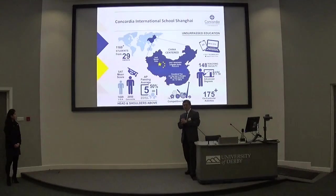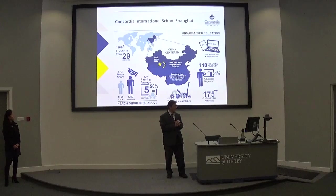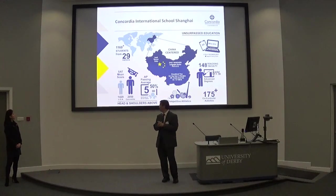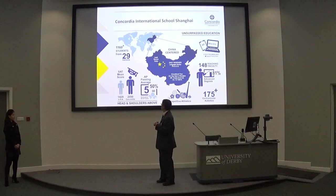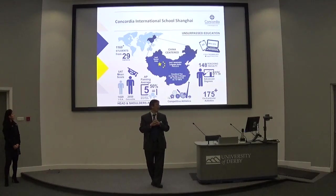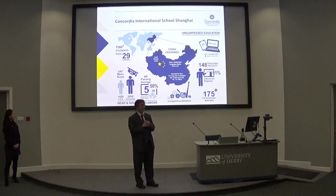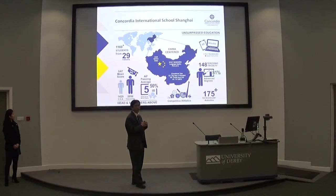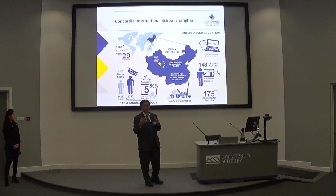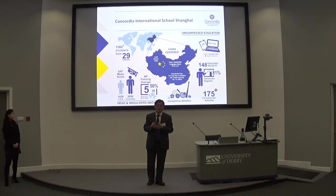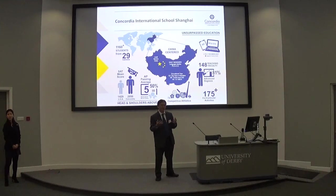Just a very brief intro of Concordia International School in Shanghai. We're actually located in China, and these are some of our statistics. We run the American program. We have about 1,160 students, about 148 teaching faculty, and one-to-one computers from grade 5 and grades 6 through 12.